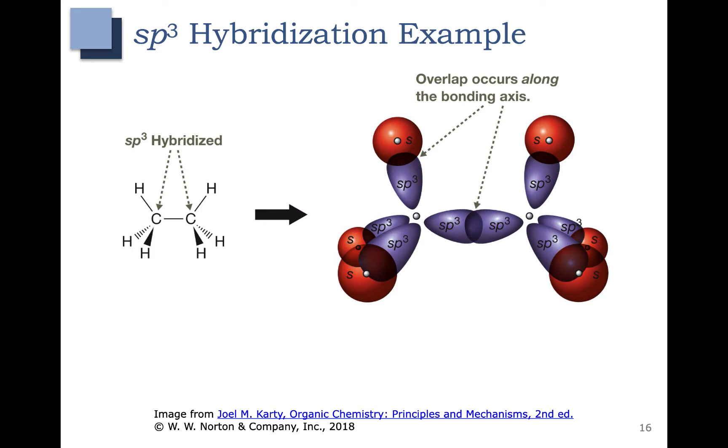So here's an example of an sp3 hybridized carbon. You can see one here on the left and one here on the right. So each of those sp3 hybridized carbons, instead of using s orbitals and p orbitals, they use the sp3 hybrid orbitals to form molecular orbitals.